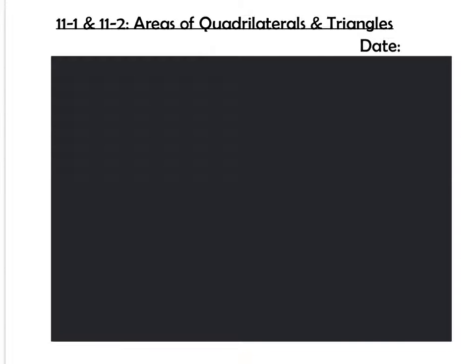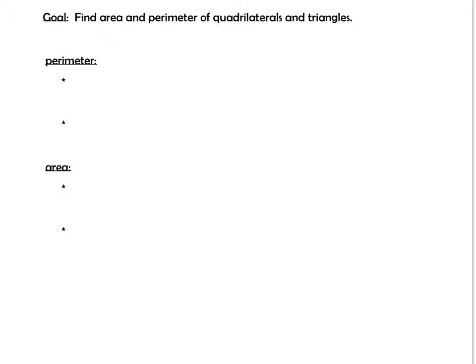Hello, welcome everybody. Here is your video lesson on 11.1 and 11.2, which are areas of quadrilaterals and triangles. Make sure you get your title down in your notes. Feel free to stop the video if I'm going too fast. The goal of this entire lesson is to find perimeters and areas of different shapes, and in this case it's quadrilaterals and triangles.